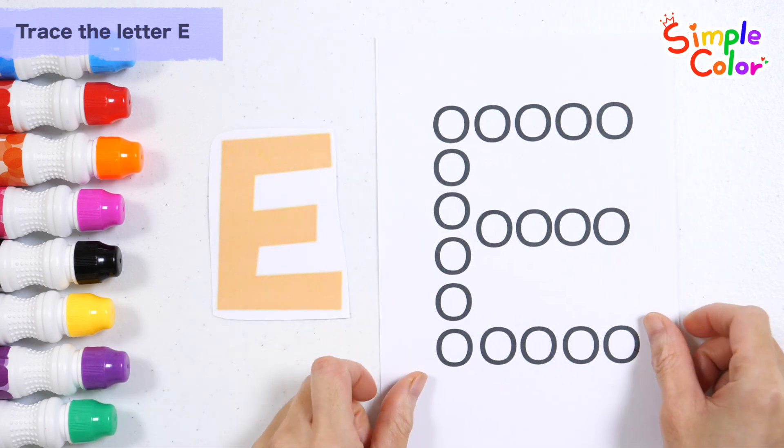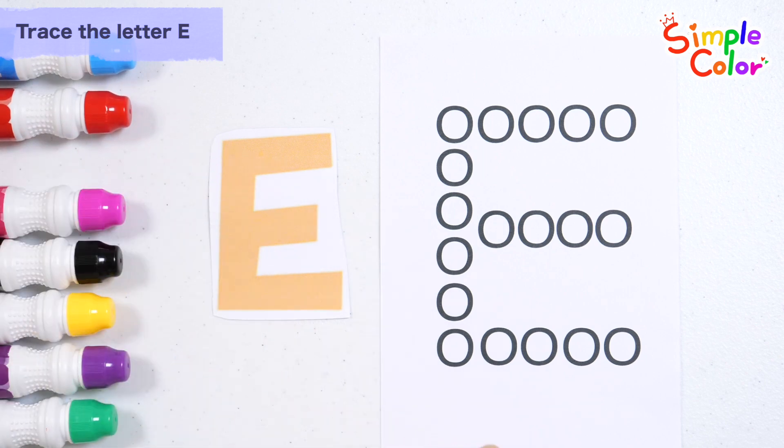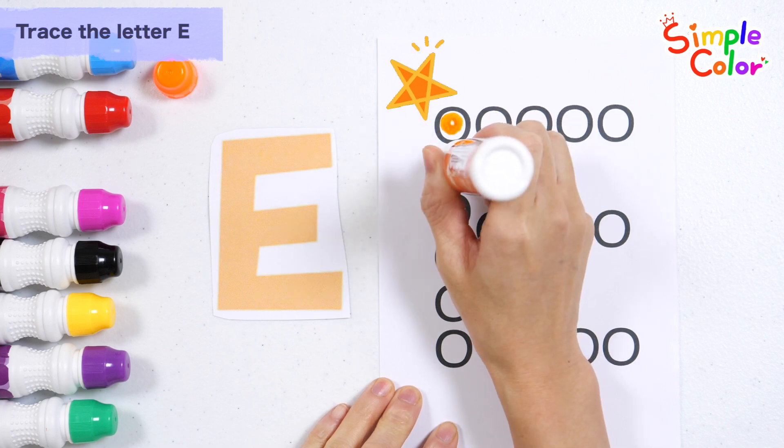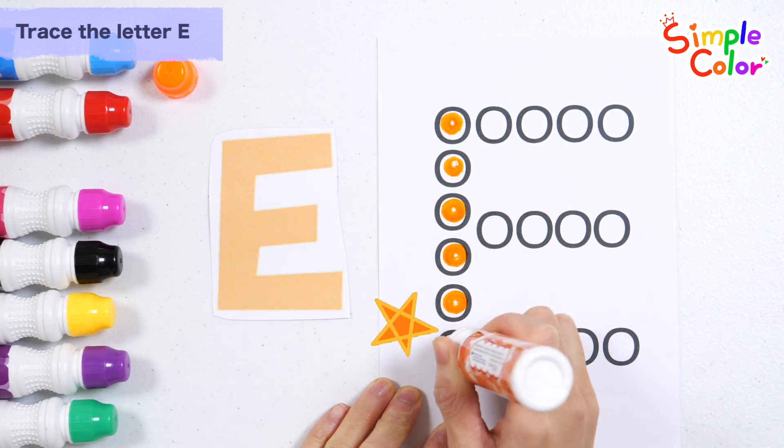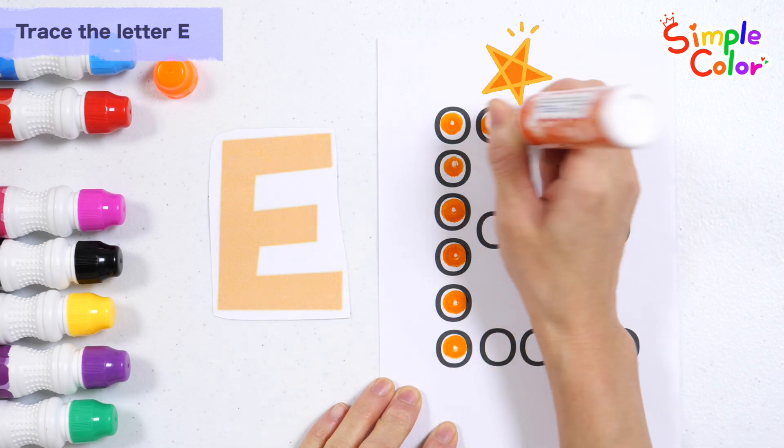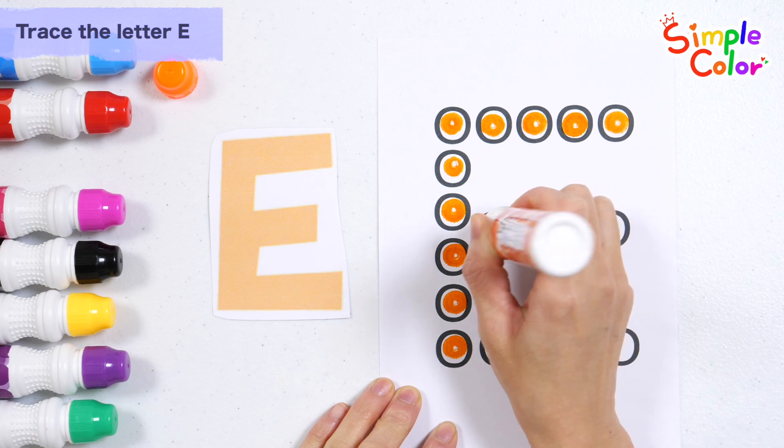Let's make the alphabet E by making dots with an orange marker. Now I know my ABCs, next time won't you sing with me?